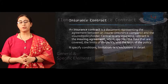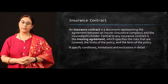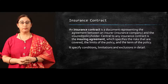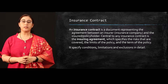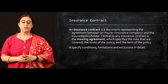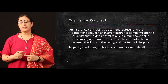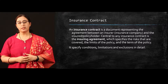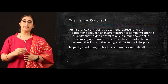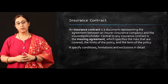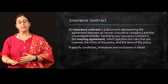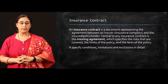Look at what exactly the insurance contract is. An insurance contract is a document representing the agreement between an insurer and the insured. What is the basic difference between the term agreement and contract? An agreement is an arrangement of terms and conditions. When this arrangement is legally defined, it becomes a contract.